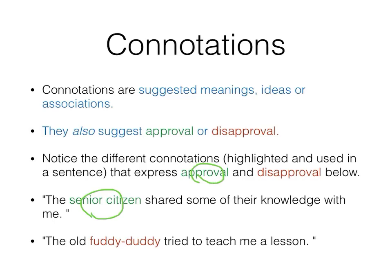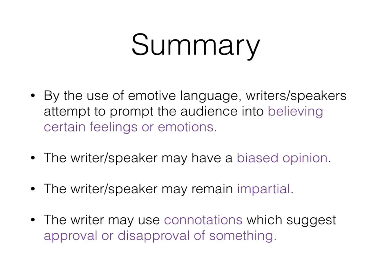To summarise, by the use of emotive language, writers or speakers attempt to prompt the audience into believing certain feelings or emotions. The writer or speaker may have a biased opinion, or may remain impartial. The writer may also use connotations, which suggest approval or disapproval of something.